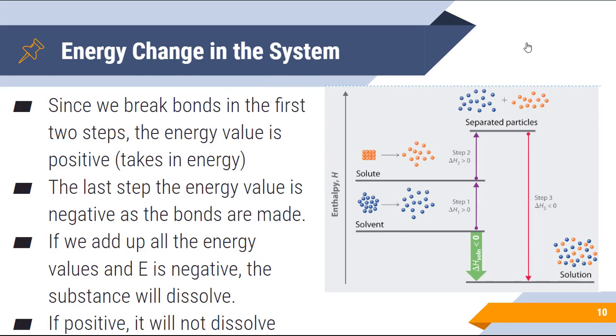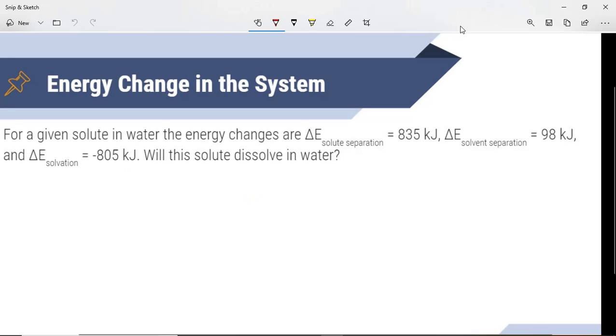Let's do a practice problem with this. For a given solute in water, the energy changes are delta E of the solute separation is 835 kilojoules, delta E of the solvent separation is 98 kilojoules, and the delta E of solvation is negative 805 kilojoules. Will the solute dissolve in water?